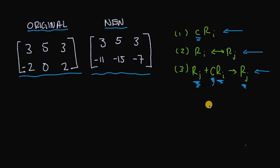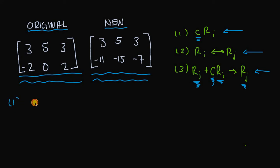Let's use these elementary row operations to figure out how this new matrix was formed from the original matrix. Rule one says we can multiply a row by some nonzero constant. Looking at our matrices, row one is exactly identical in both — we could have multiplied row one by the nonzero constant one to obtain the new row one.